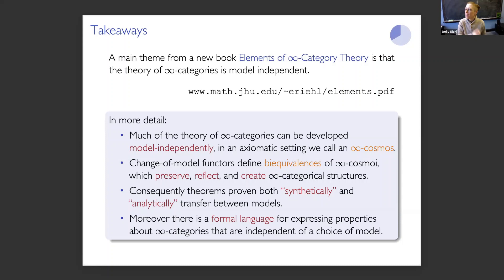From our framework, it's transparently obvious that a synthetic proof of a theorem in infinity category theory translates between models. But very importantly, for analytic proofs — proven by our colleagues using the combinatorics of a particular model — we can take the conclusion of the theorem and translate it between models. That's a key point of our model independence theorem. That theorem is actually more subtle than this advertisement is suggesting, because not every statement about ordinary categories is invariant under equivalence of categories. Not every statement about infinity categories could necessarily be invariant under change of model.